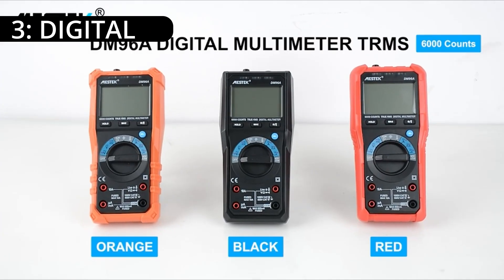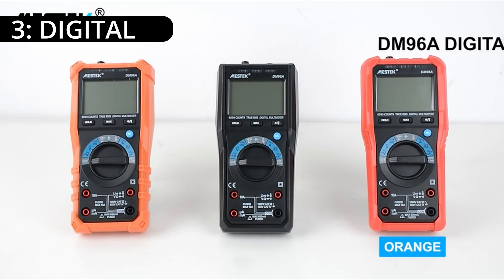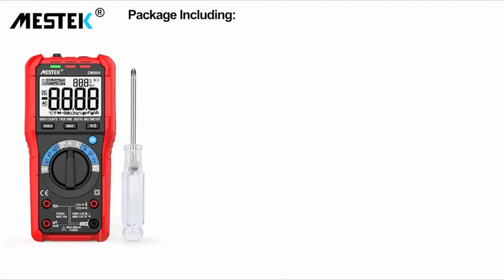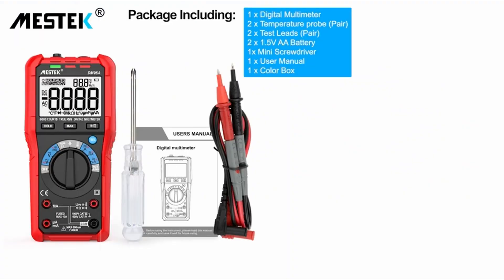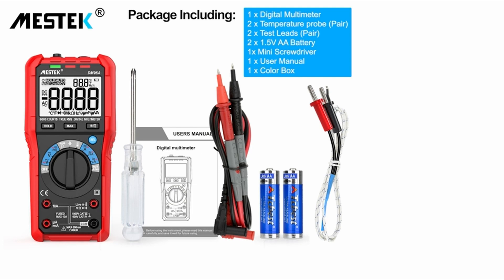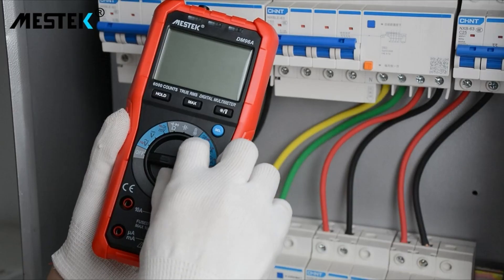On number 3, Digital. In the world of digital multimeters, the Mestec TRMS 6000 stands out as a powerhouse of features, combining accuracy, versatility, and user-friendly design.